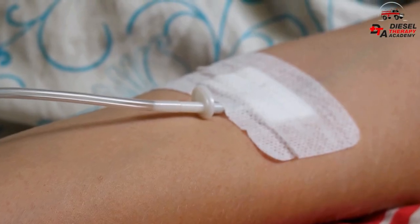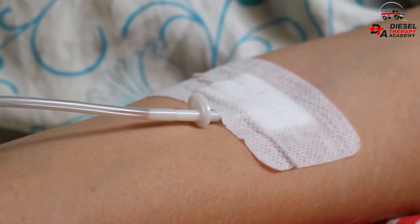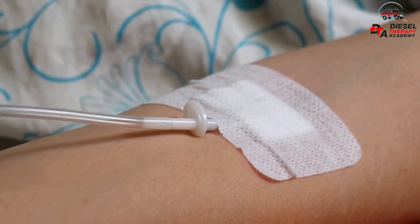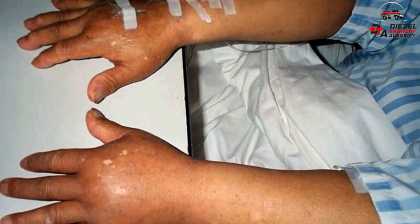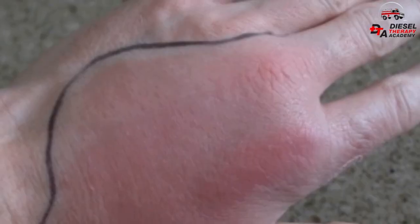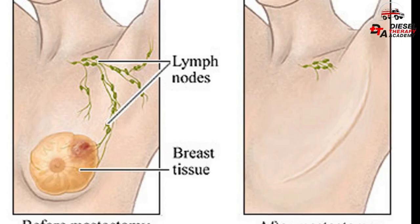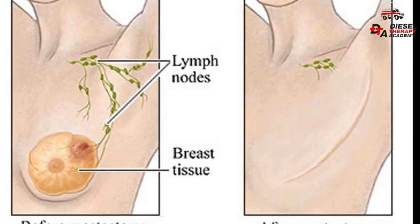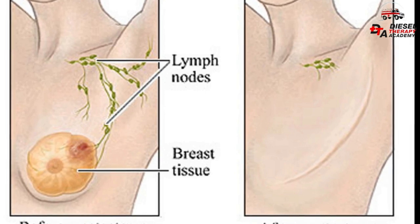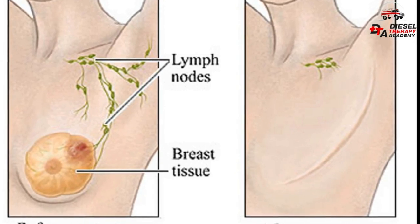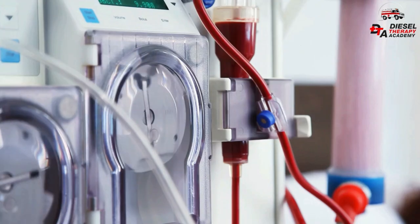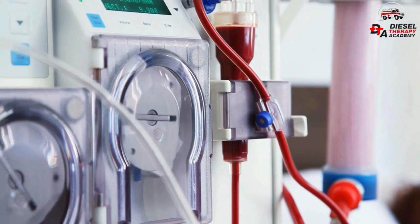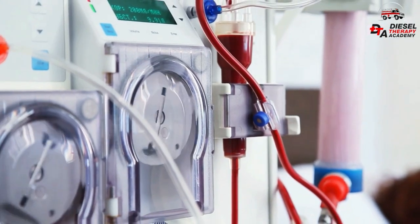During the location assessment, ensure that there are no contraindications where you will start the IV. Contraindications include an extremity with significant edema, burns, fractures, phlebitis, thrombus, or overlying cellulitis. Remember that you cannot start an IV on women after an ipsilateral or same-side radical mastectomy with lymph node removal, as it contributes to lymphedema. You also cannot start an IV on a dialysis patient in the extremity with a fistula or AV graft.